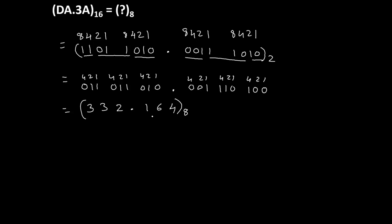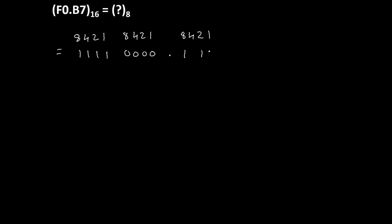Let's take one more example. We want to convert F0.B7 from base 16. F is 15, so using 8421: 8+4=12, 12+2=14, 14+1=15. For 0, using 8421, all digits are 0. Fractional point stays. Then B is 11, so using 8421: 8+2=10, 10+1=11. Finally for 7, using 8421: 4+2+1=7. We have now converted this hexadecimal number into binary.